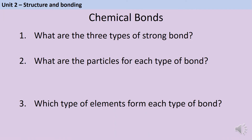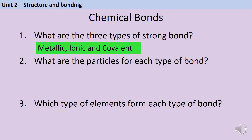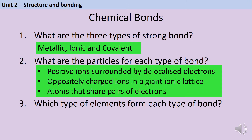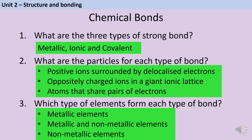The three types of strong chemical bond are metallic bonds, ionic bonds and covalent bonds. In metallically bonded substances we find positive ions surrounded by a sea of delocalised electrons. In ionically bonded substances there are oppositely charged ions arranged together in a giant ionic lattice, and in covalently bonded substances we find atoms that share pairs of electrons. Metallic elements will form metallic bonds, mixtures of metallic and non-metallic elements will form ionic bonds, and non-metallic elements will form covalent bonds.